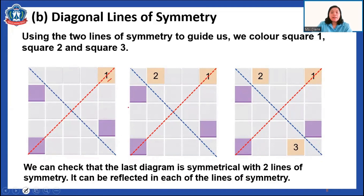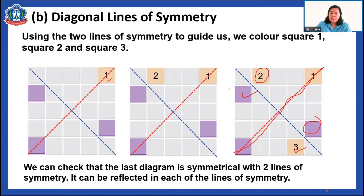Let's focus on the red line of symmetry. If you have this purple tile here, the other side should also have a colored tile — they are symmetrical. Now focusing on the blue line: this tile is colored purple, so the corresponding reflected area on the other side should also be painted. This is how our painted squares are all symmetrical in two diagonal directions.